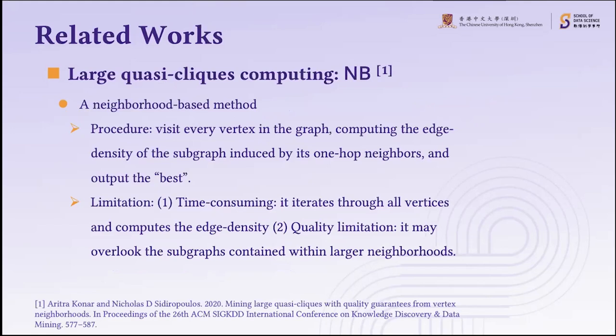Before presenting our algorithms, let me introduce some related work. The first algorithm is NB, a neighborhood-based method. It works by visiting every vertex in the graph, computing the edge density of the subgraph induced by its one-hop neighbors, and outputting the best. This algorithm has limitations: it is time-consuming because it iterates through all vertices and computes edge density for every vertex. It also has a quality limitation because it treats the entire neighborhood as a quasi-clique, and may overlook denser subgraphs contained within larger neighborhoods.